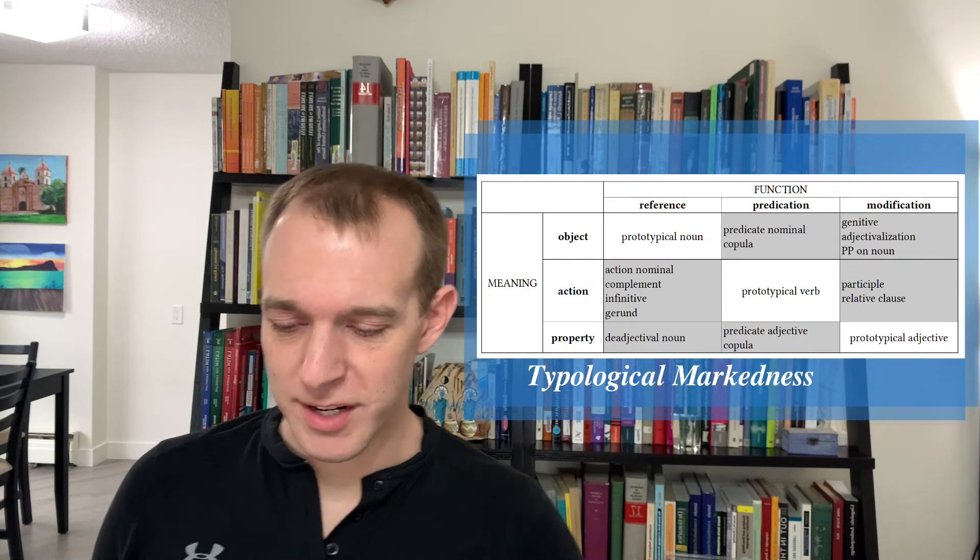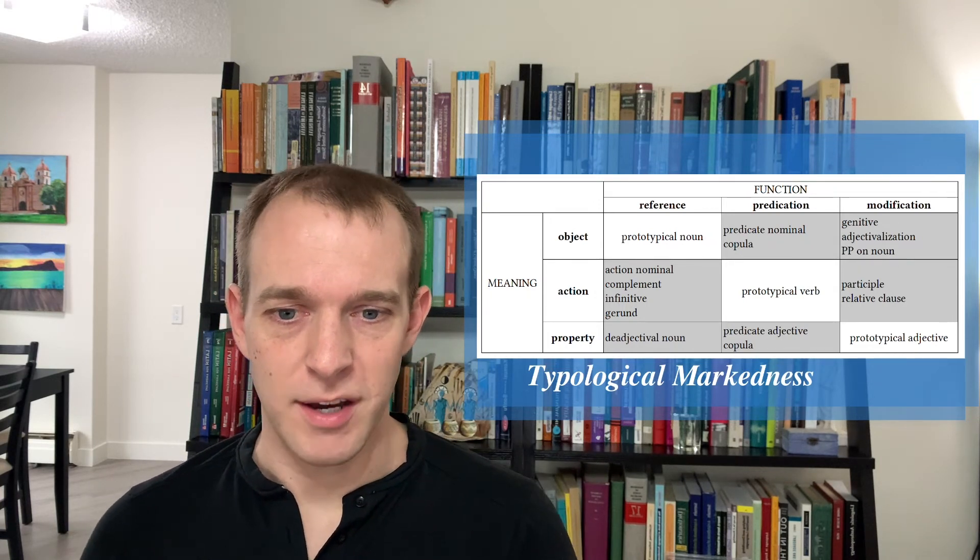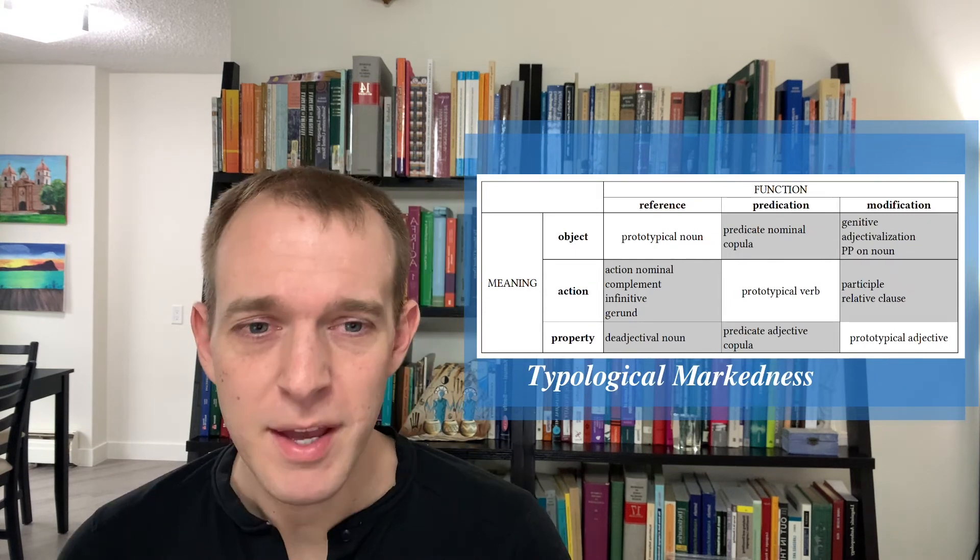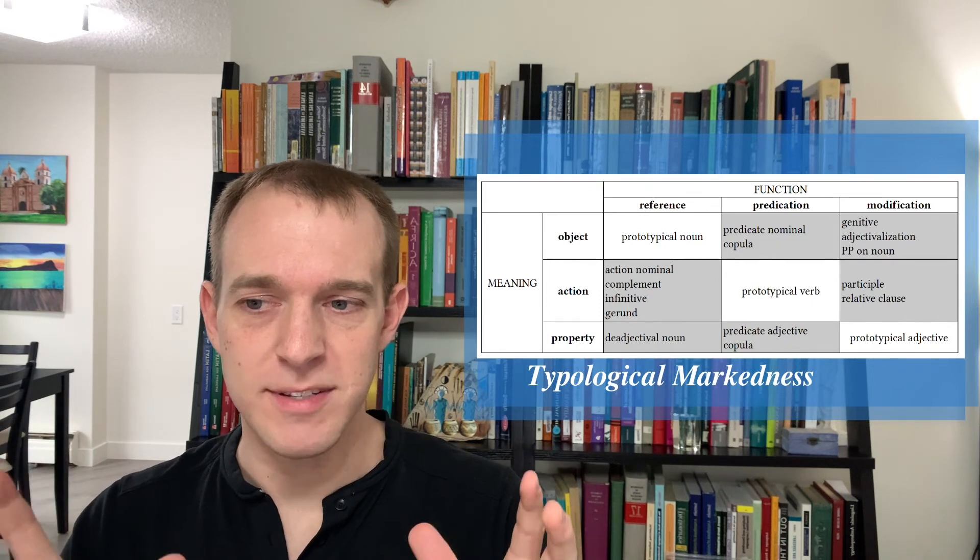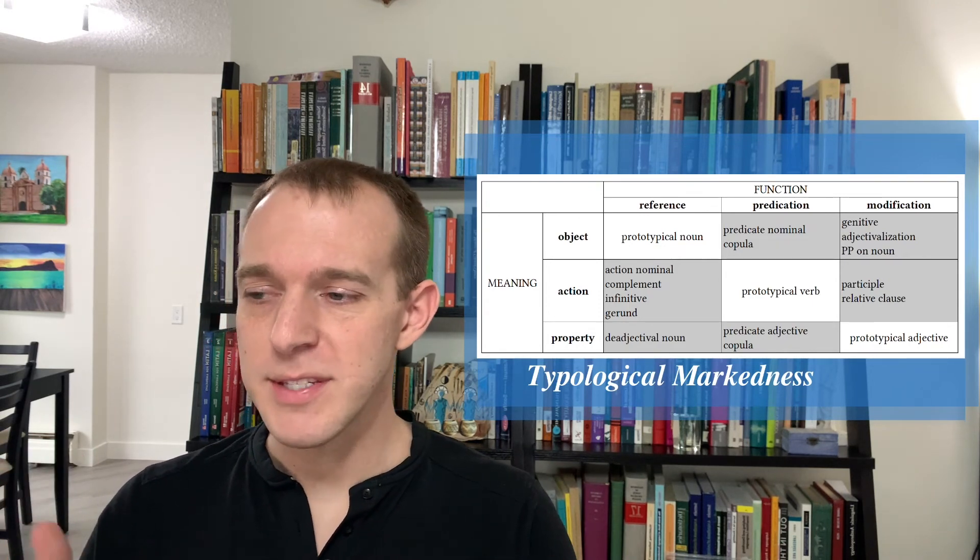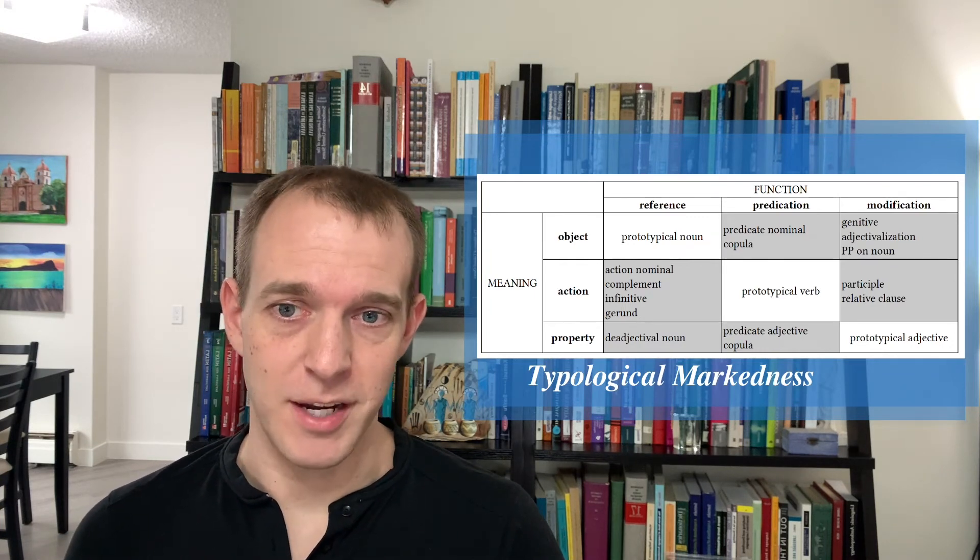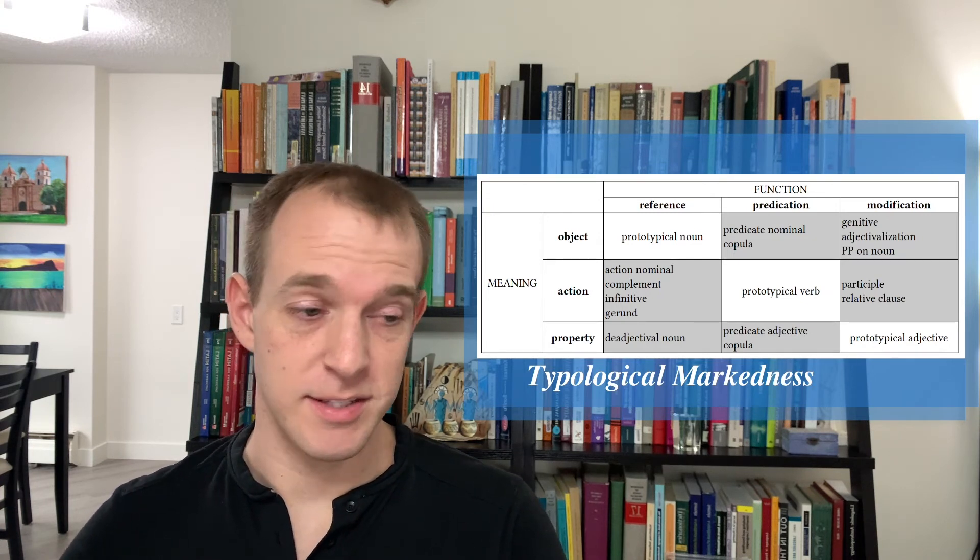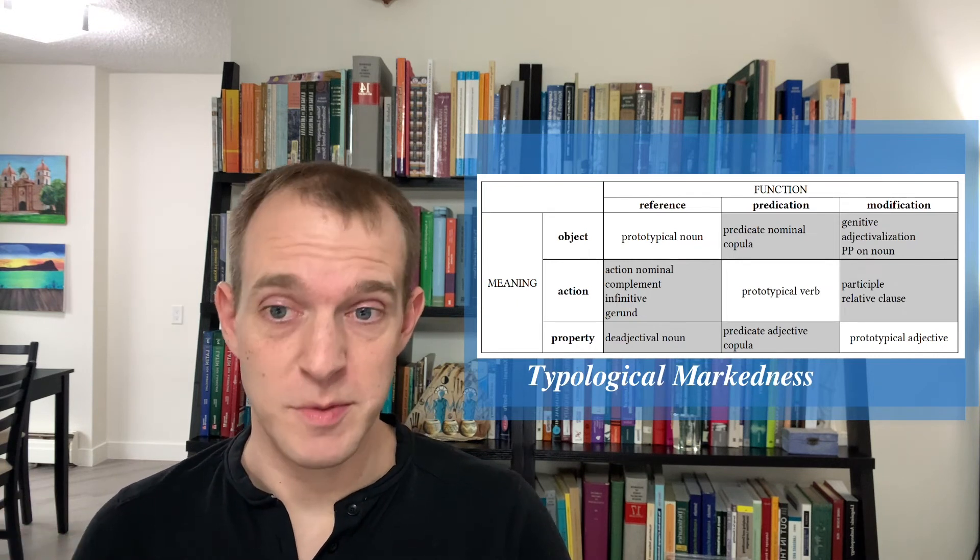And so that's one of the really exciting developments that have come out of the typology of parts of speech in the past 30 years, maybe. Precisely because this gets at how humans categorize things. So this ties in very nicely with what we know as prototype theory. There's all sorts of really good empirical evidence from psycholinguistics and psychology in general that humans think in terms of prototypes.